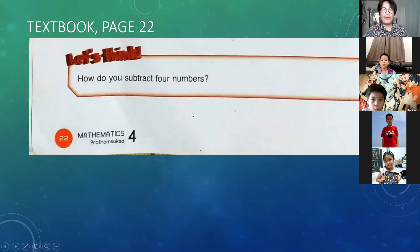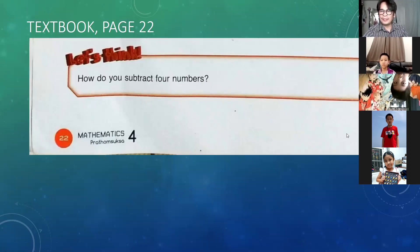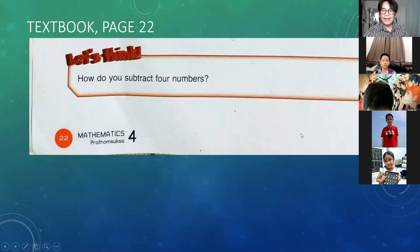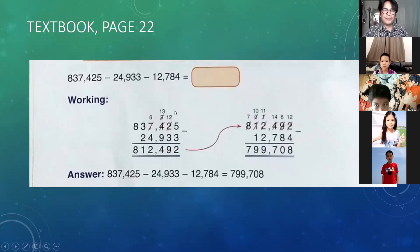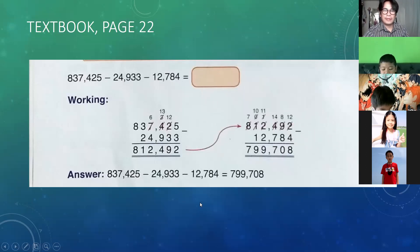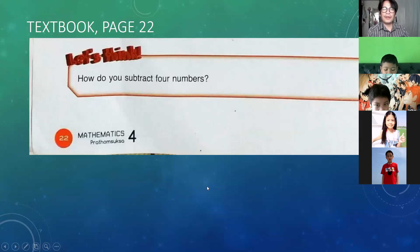How do you subtract 4 numbers? A while ago we discussed how to subtract 3 numbers: the second number is subtracted from the first number, and then the third number is subtracted from the first difference. So how do you subtract 4 numbers?